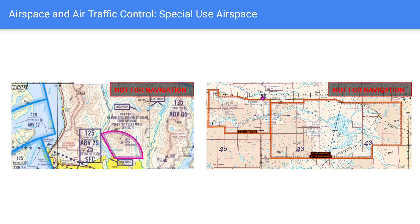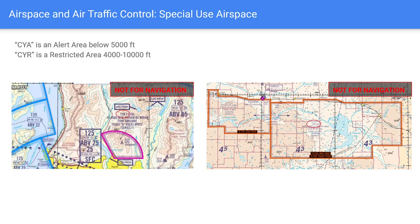For special use airspace, it's not that different from the US — just depicted differently. CYA is an alert area: no permission needed to enter, but be aware of activity. CYR is a restricted area: you cannot enter or must request permission to see if it's active.